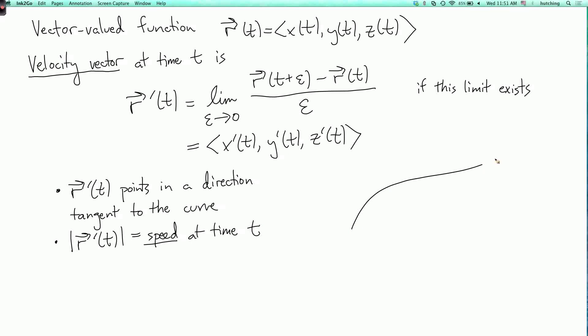So the picture, if here's the curve that R of t moves along, here's the point R of t identified with the vector, and the velocity vector looks like this. The velocity vector is going to be tangent to the curve, and the tangent line to the curve at time t goes through the point R of t, so that's where we are, and has tangent direction R prime of t.